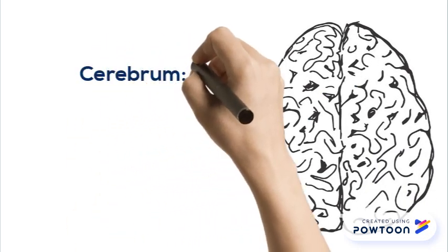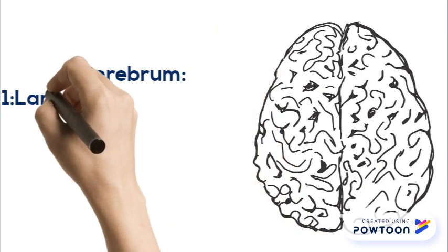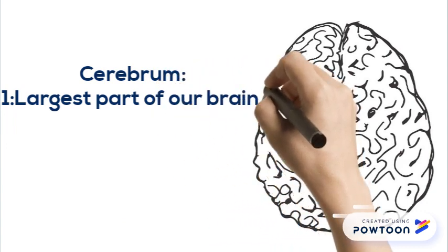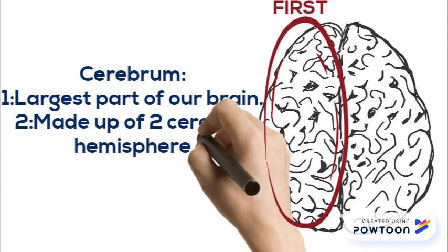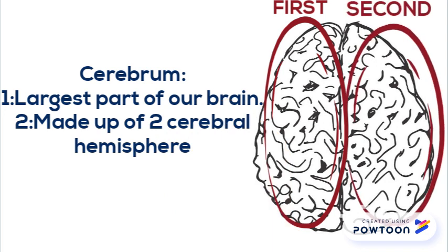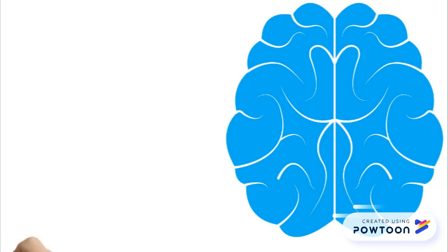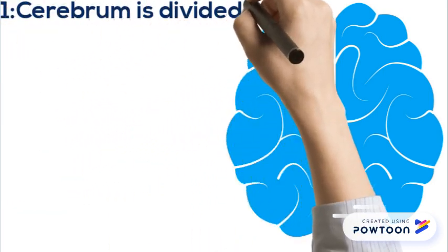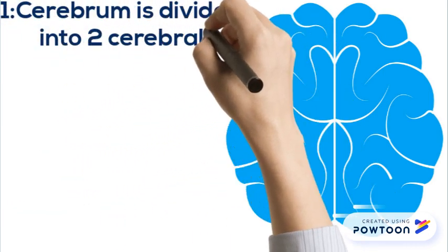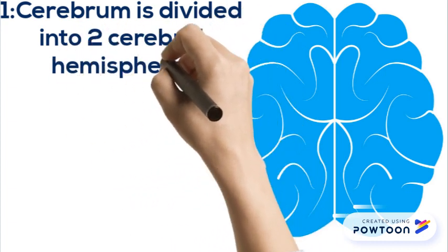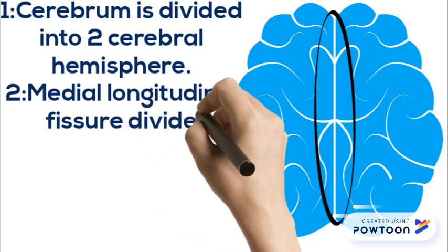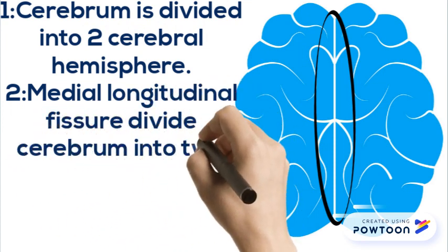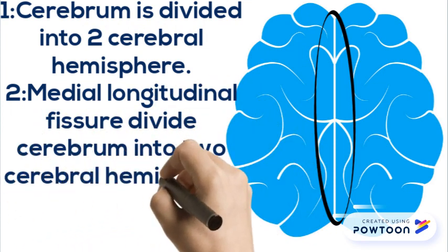Our cerebrum is the largest part of our brain and it is made up of two cerebral hemispheres. It is divided with the help of the medial longitudinal fissure, which divides the cerebrum into two cerebral hemispheres.